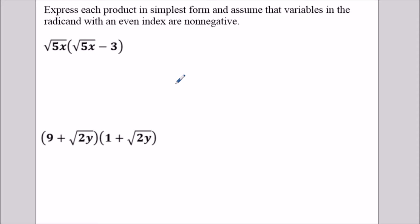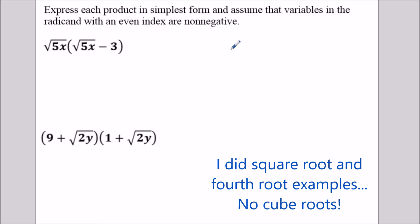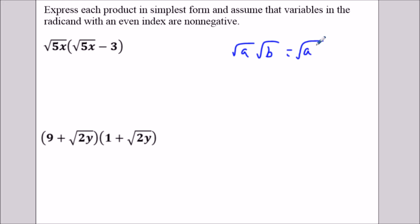So first we'll start off with the simple ones here. The main idea we're using is that anytime I do the square root of a times the square root of b, I could write this as the square root of a times b. This also works if I had a cube root in front, except the resulting radical would also have a cube root in front. So this is an important idea that we're going to make use of.